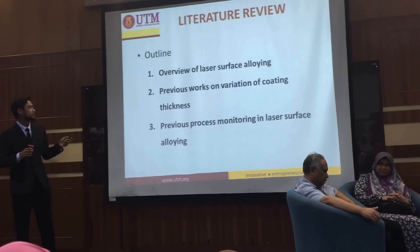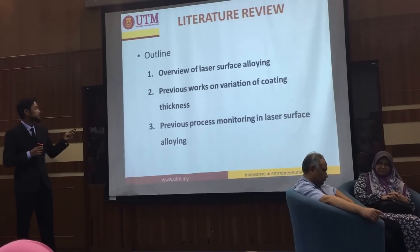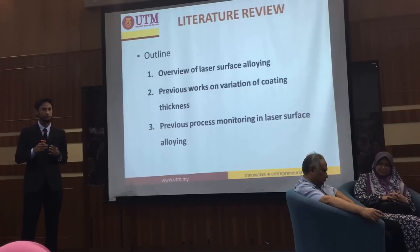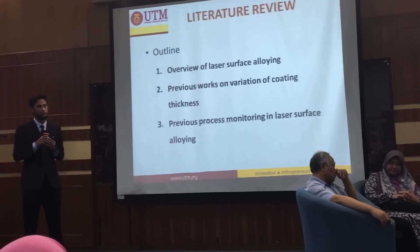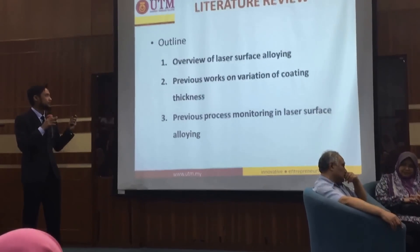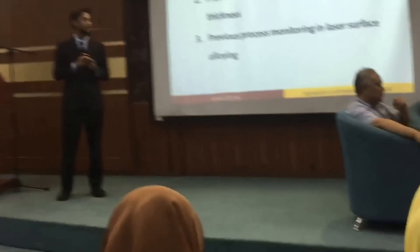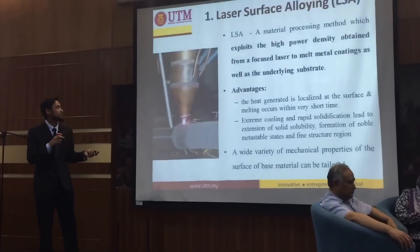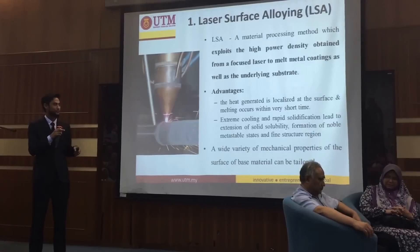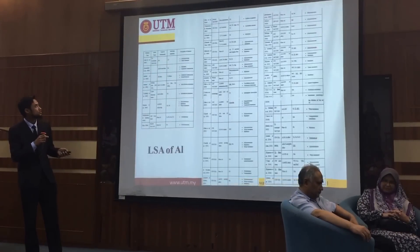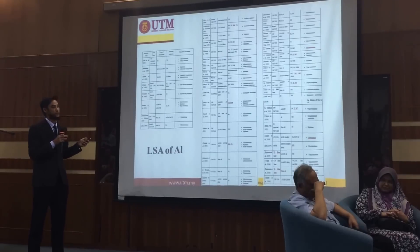This is the literature review I have done for starting my research. It starts from an overview of laser surface alloying — what it is, what process I'm going to do in my research, and the types of implementation of laser surface alloying. I also covered previous works on variation of coating thickness and previous plasma monitoring in laser surface alloying. This is basically the past research in laser surface alloying on aluminum, especially since 1981.